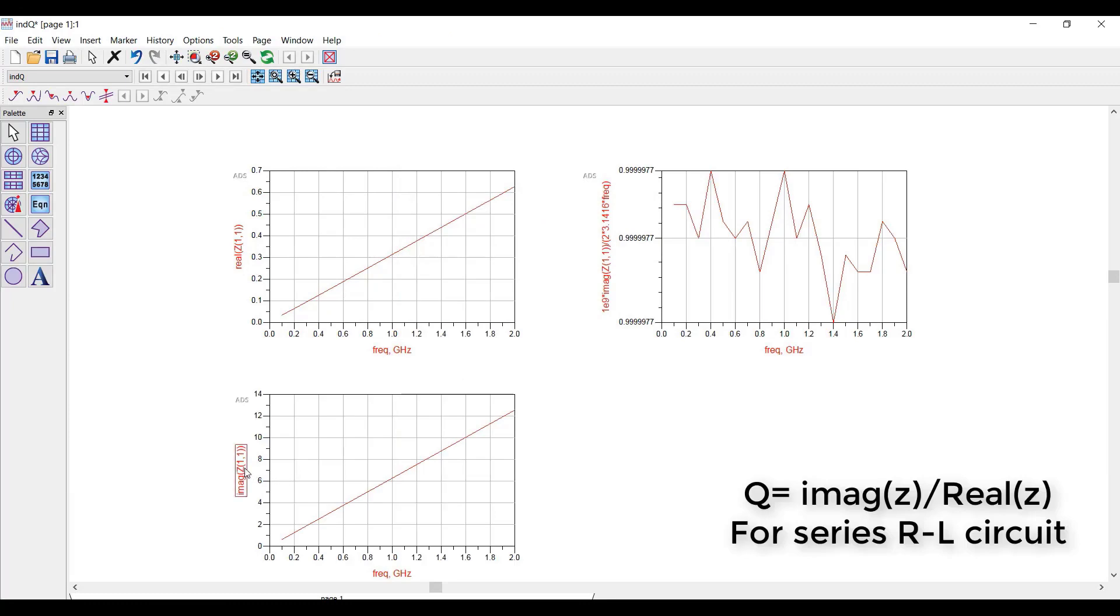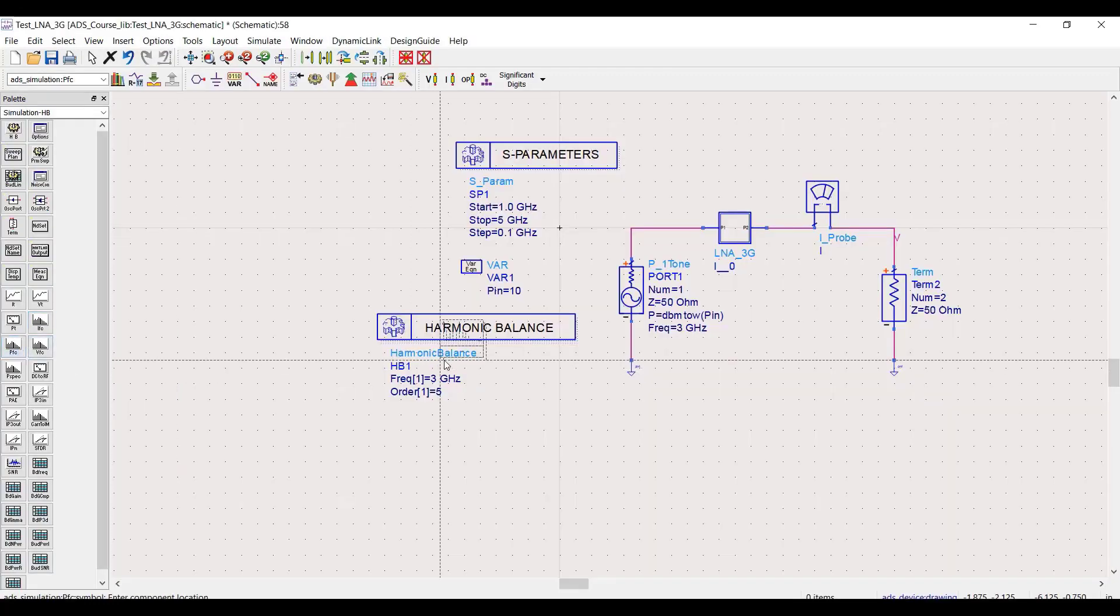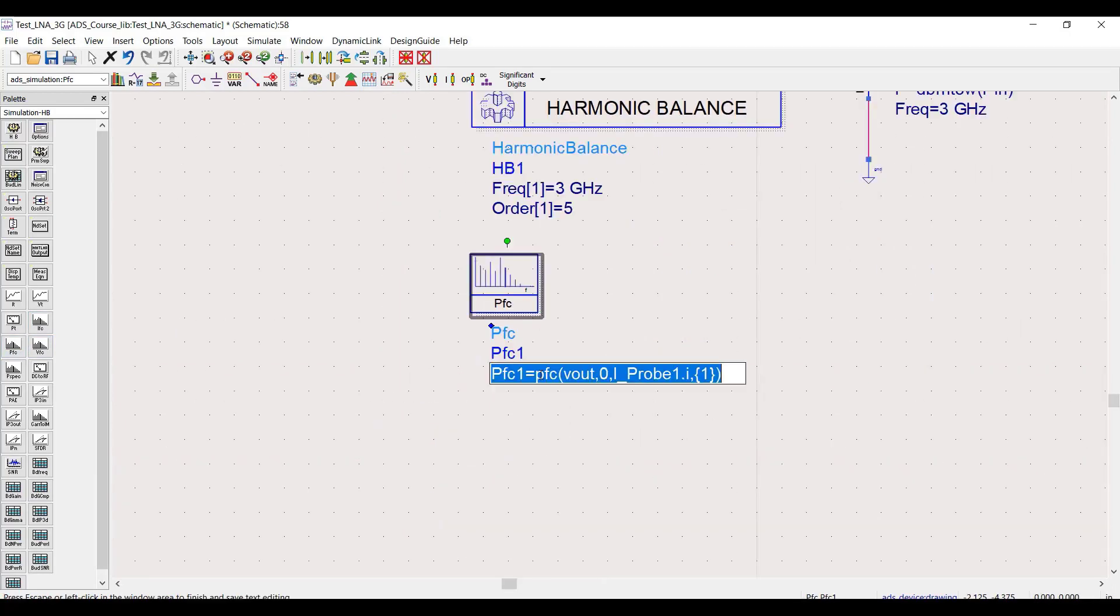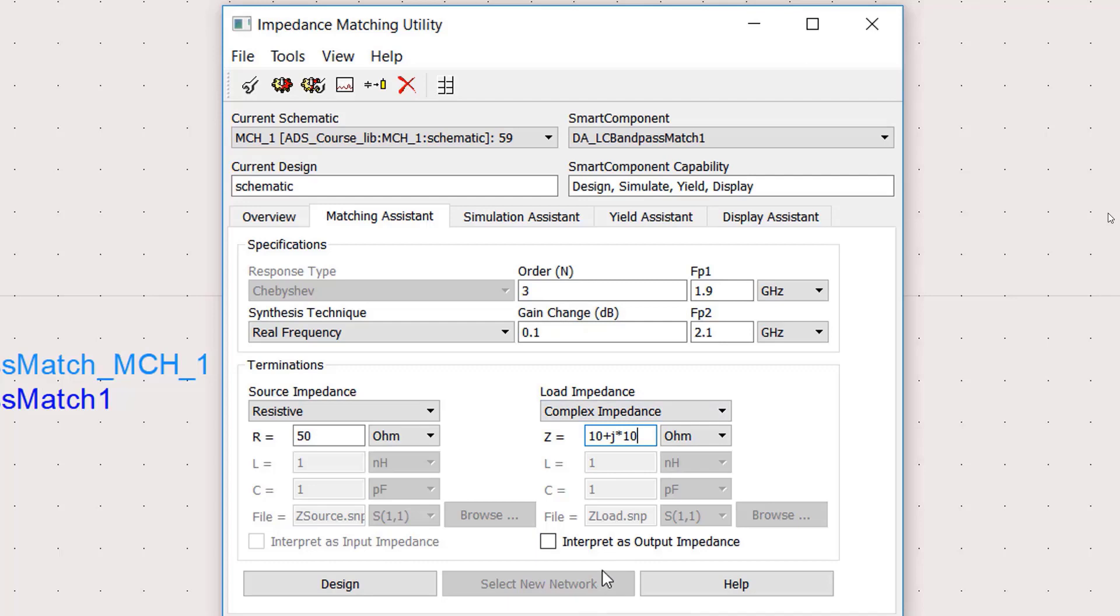We are going to start with simple simulations like DC, AC, S-parameter, and later on we will go on to harmonic balance, P1dB, IP3 simulations, matching optimization, and different kinds of things that you need to know about ADS.